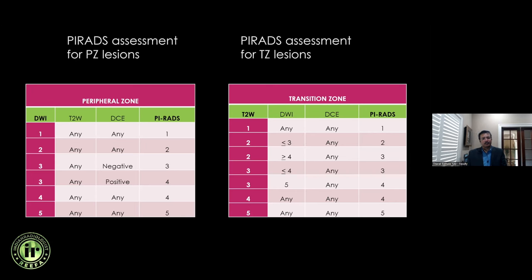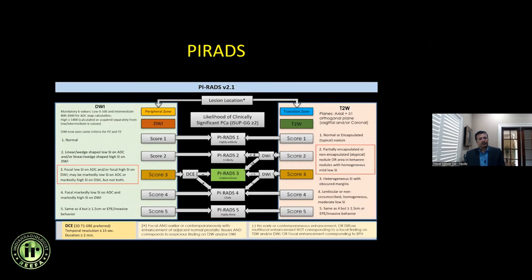These are the key aspects of a somewhat confusing scoring system often encountered in clinical practice. To summarize: for peripheral zone lesions, the dominant sequence is DWI; for TZ lesions, the dominant sequence is T2. Other sequences matter most when there is an intermediate score. If you are reading at the workstation, keeping this algorithm on one slide at your desktop will help you arrive at a final score quickly.